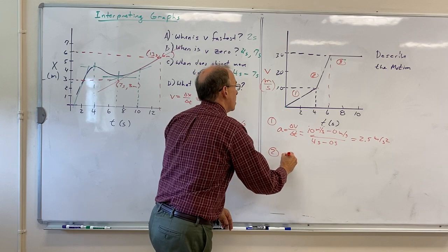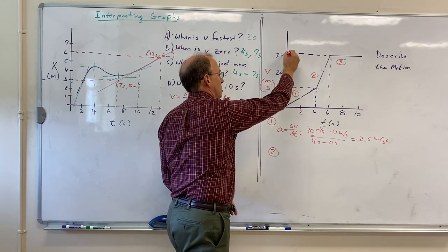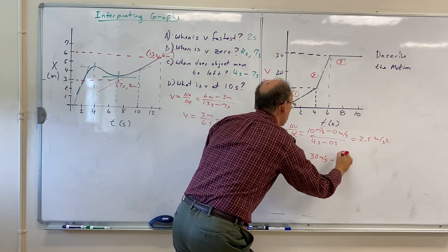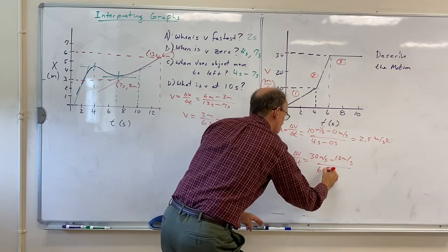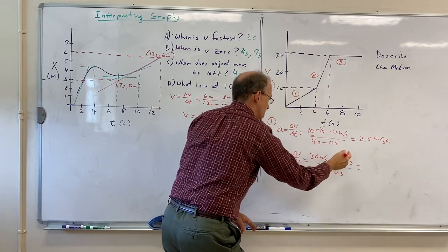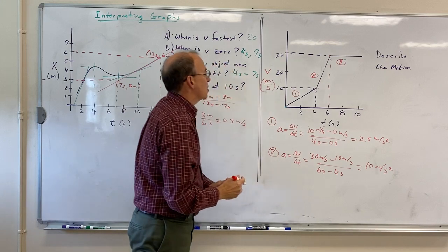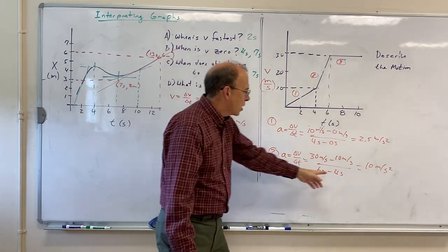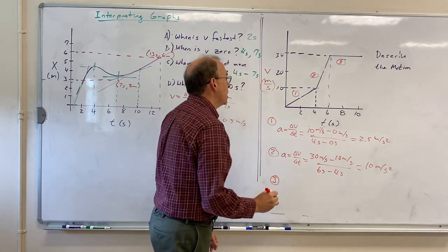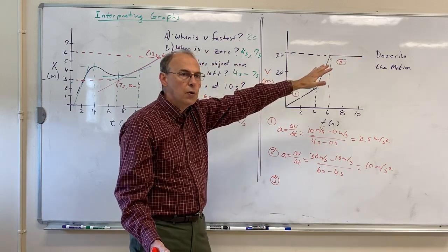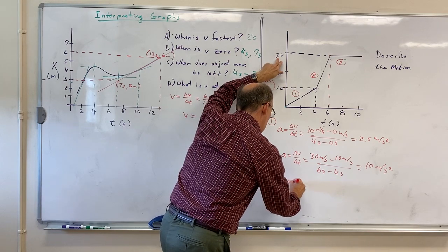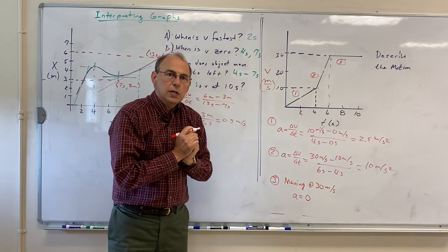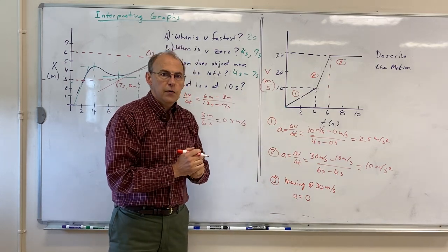In region two, the particle sped up even more from 10 m/s to 30 m/s with acceleration = Δv/Δt = (30 m/s − 10 m/s) / (6 s − 4 s) = 20/2 = 10 meters per second squared. The particle still has positive velocities between ten and thirty, so it's moving to the right and accelerating at 10 m/s². In region three, the slope is zero — that does not mean the velocity is zero. The velocity is thirty meters per second, so the particle is moving at 30 m/s and the acceleration is zero.